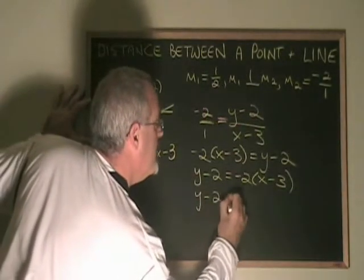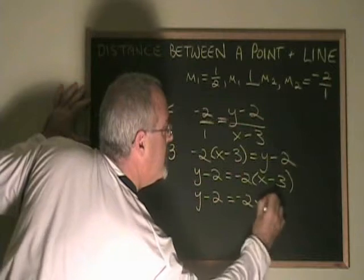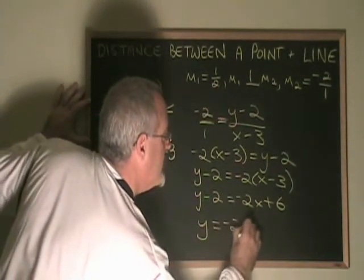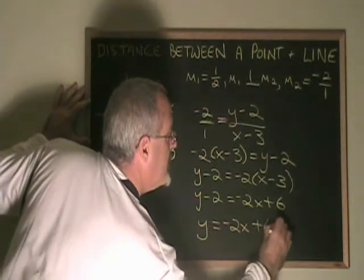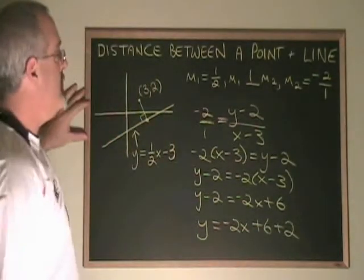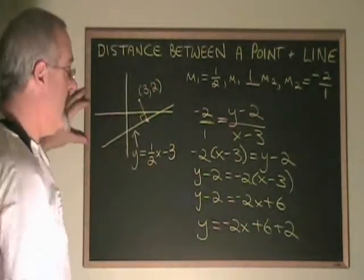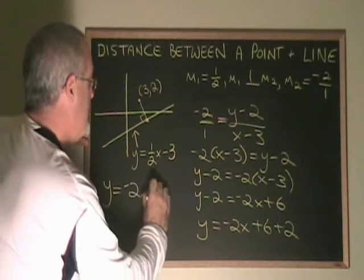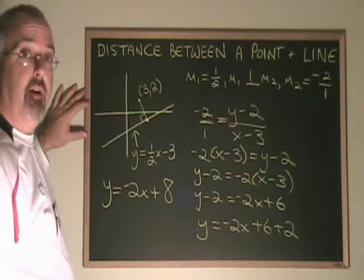y minus 2 equals negative 2x plus 6. y equals negative 2x plus 6 plus 2. So the equation of this second perpendicular line has to be y equals negative 2x plus 8. We're nearly there.